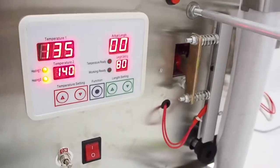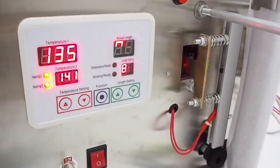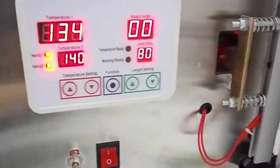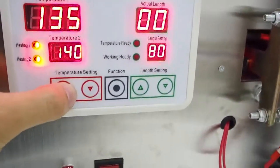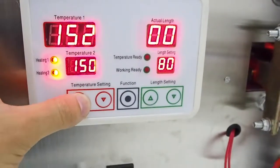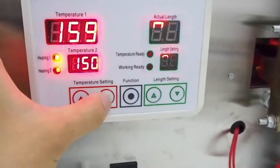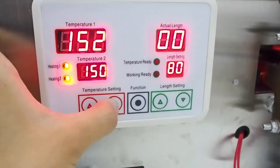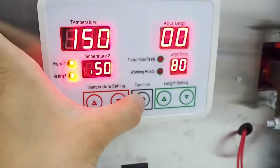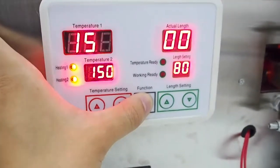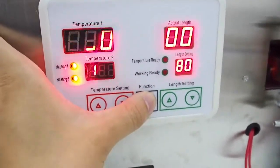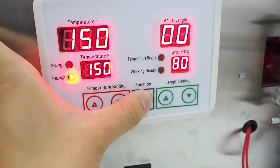As the machine is heating up, I'm going to take some time to explain the control panel here. Obviously this button here is for adding temperature, minusing temperature. The function button here is to switch between two temperatures.